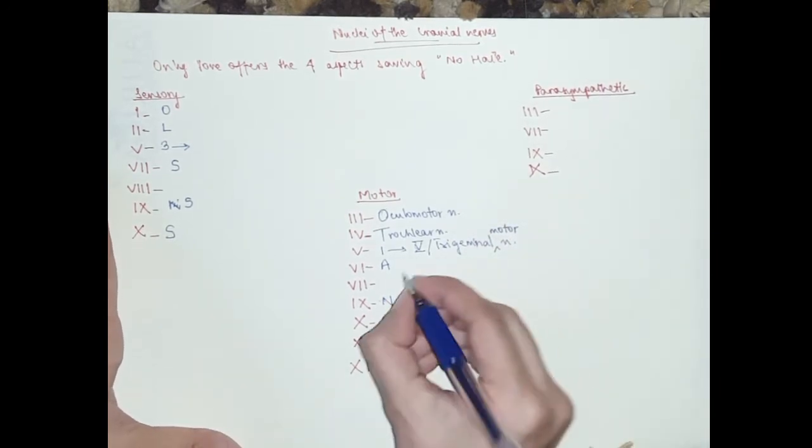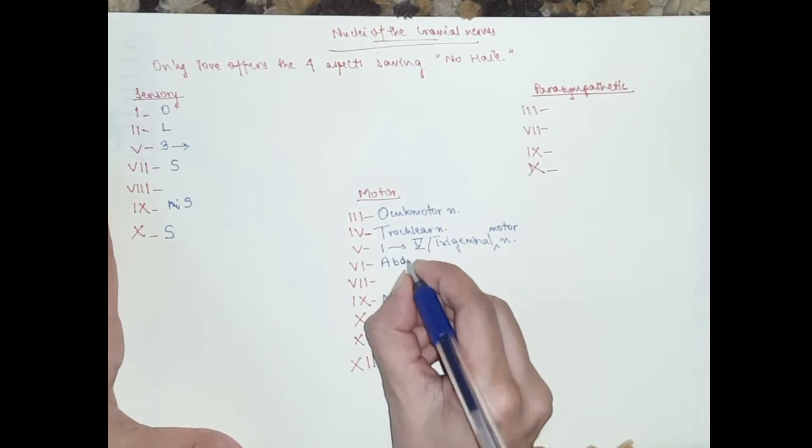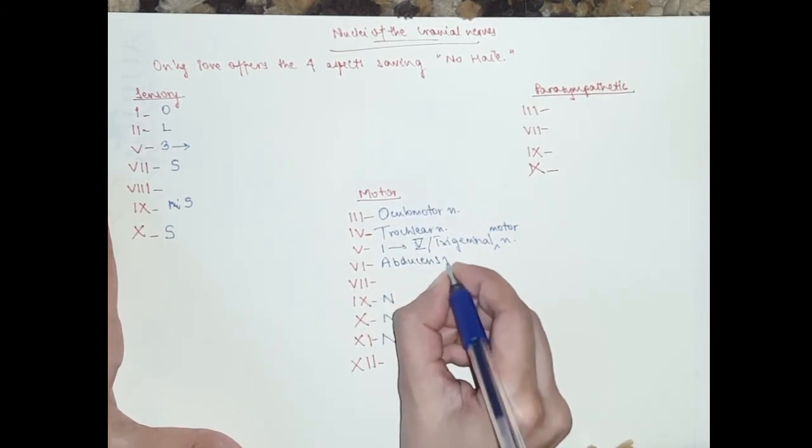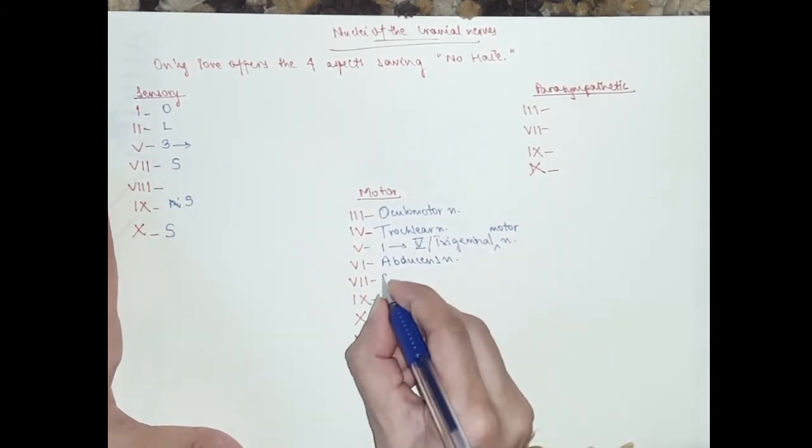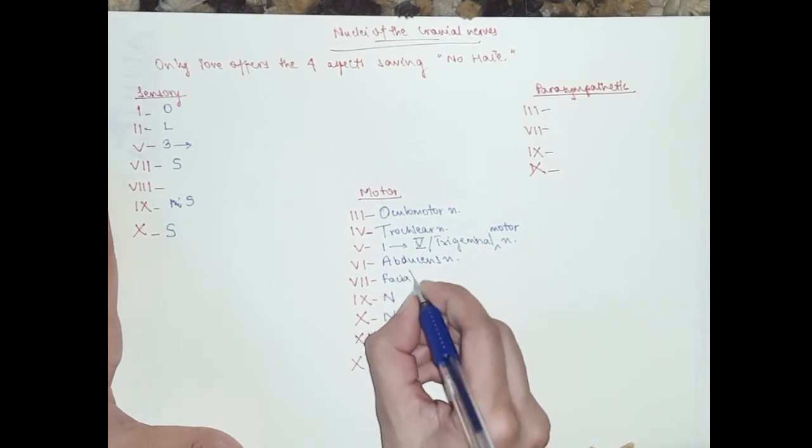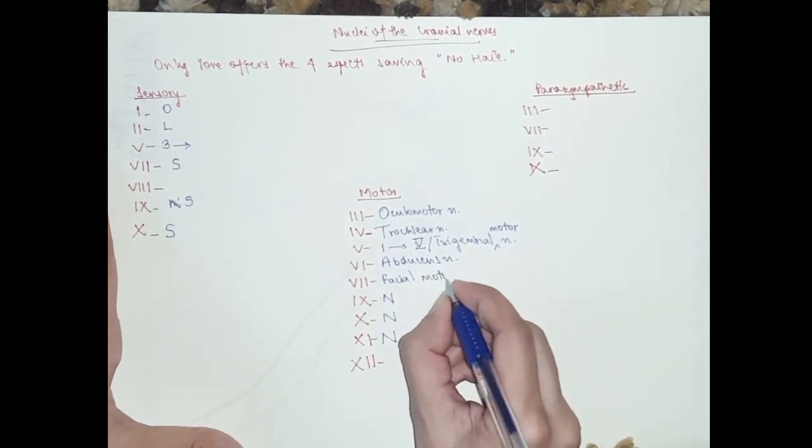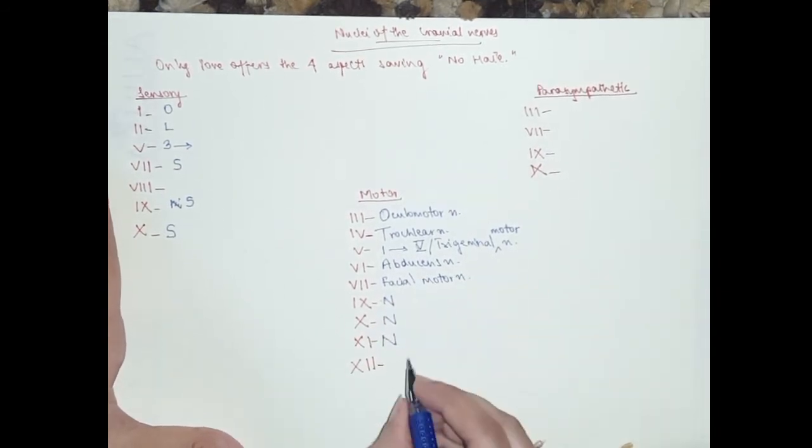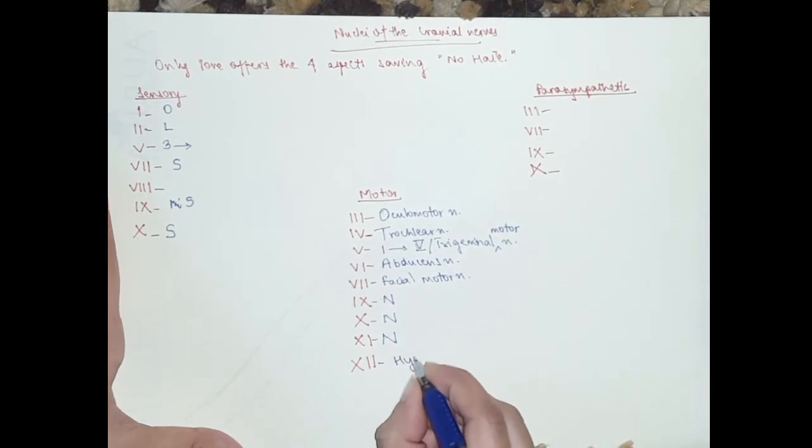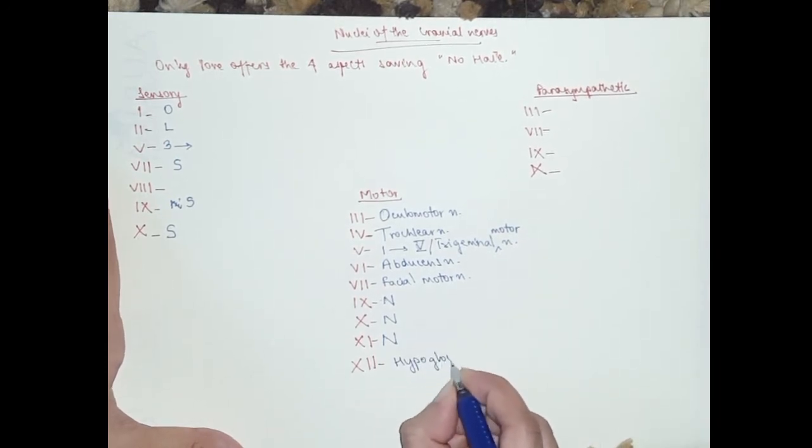Then you've got six is abducens, so abducens nucleus. Seven is facial, so facial motor nucleus. And twelve is hypoglossal, so hypoglossal nucleus.